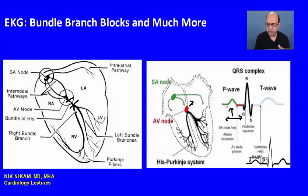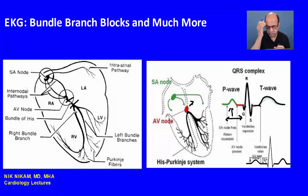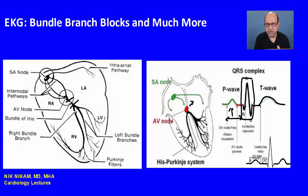This is followed by an isoelectric segment and then repolarization of the ventricles, which results in the T wave. Most of the bundle branch block features are going to be focused on the QRS complex and some ST-T changes associated with the bundle branch blocks.